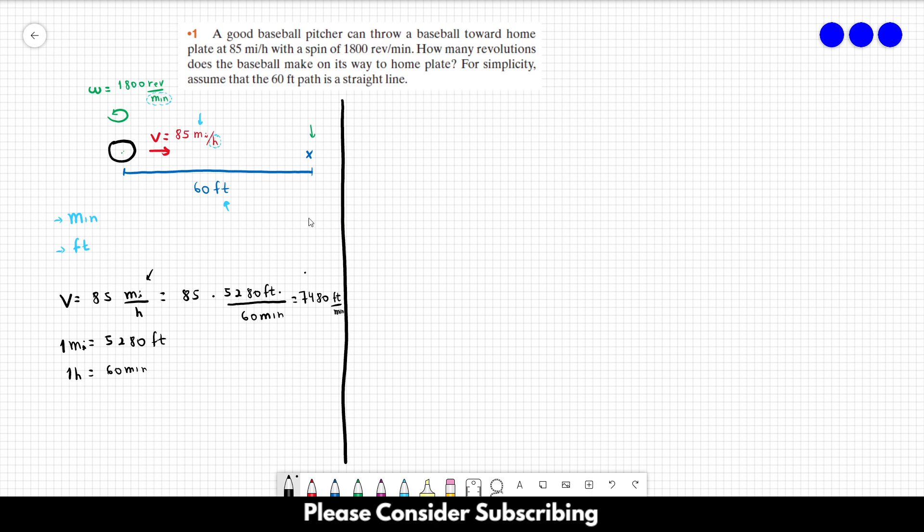So the equation that we're going to use to find the number of revolutions, it's this one over here. The angular position is equal to the angular velocity times the time it took to do the movement. So we want to know this value over here. We know this value and we don't know t. So we have to find t.